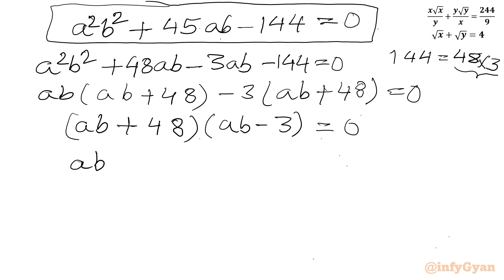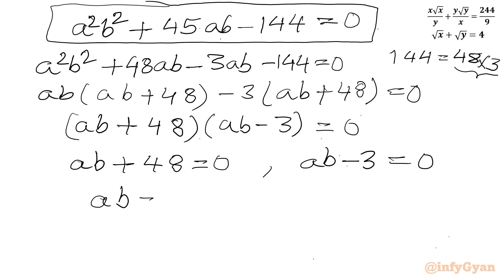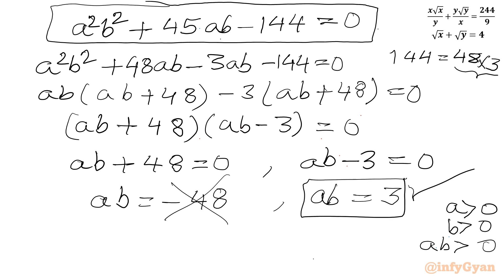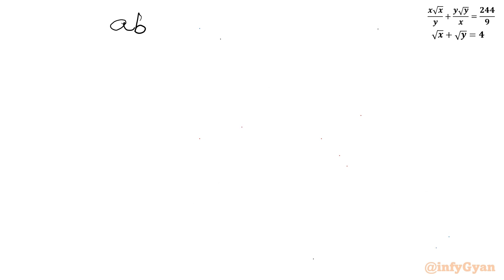From the factored equation, ab + 48 = 0 gives ab = −48, and ab − 3 = 0 gives ab = 3. Since a and b are both positive, their product must be positive, so we reject ab = −48 as it would generate complex solutions. We accept ab = 3.